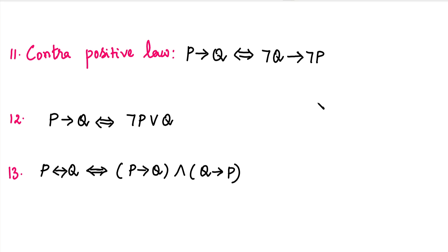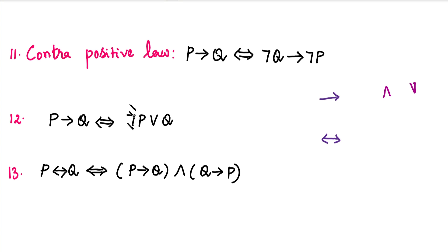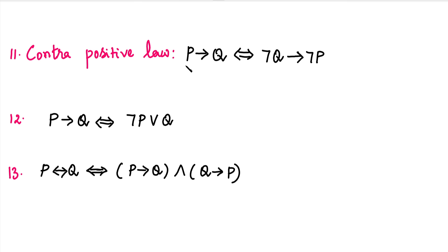Next is conditional and biconditional. The conditional is the 'if-then' connective, and the biconditional is the 'if and only if' connective. Using these two connective symbols, we can rearrange problems using the following laws.